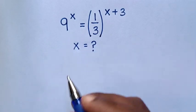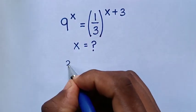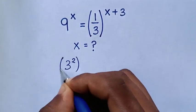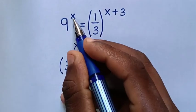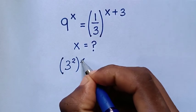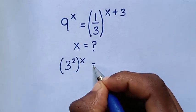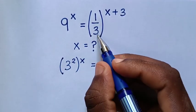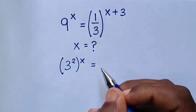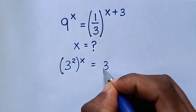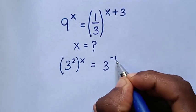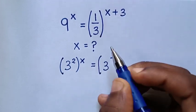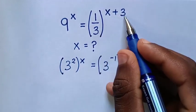So, 9 is the same as 3 squared, then bracket power of x is equal to 1 over 3, which is 3 power of negative 1, bracket power of x plus 3.